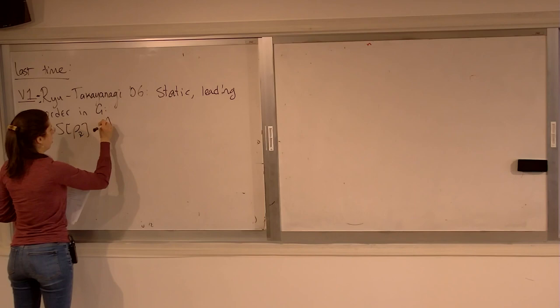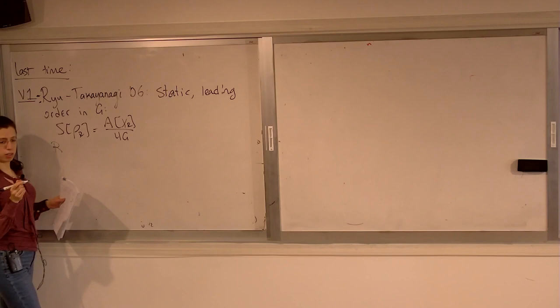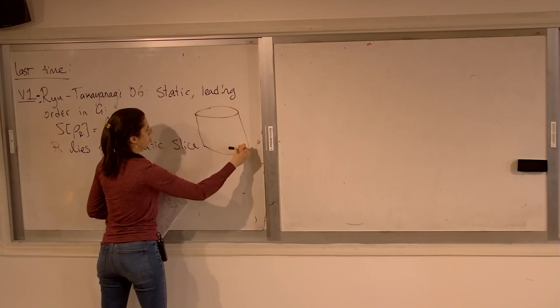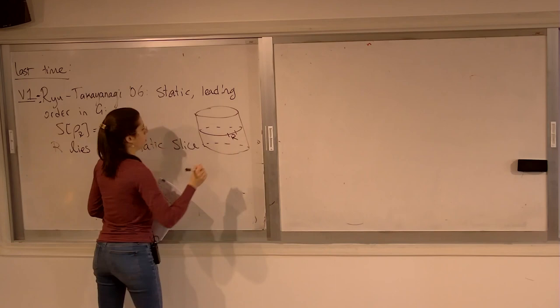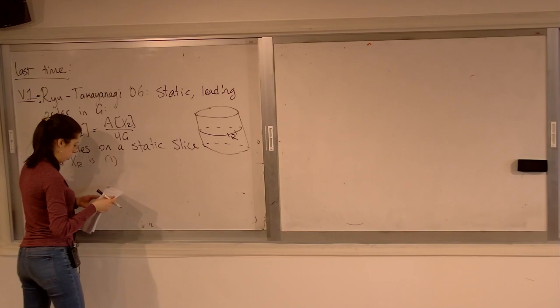The V1 entropy is given by the area of the surface over 4G. Where R is the boundary region, this lies on a static slice. And X_R is a surface we call the Ryu-Takayanagi surface, or the RT surface, which satisfies the following properties.